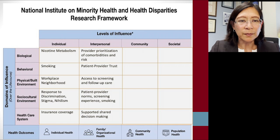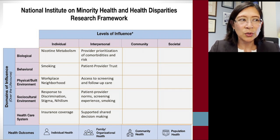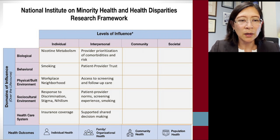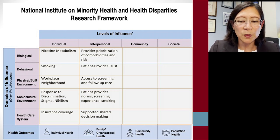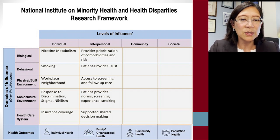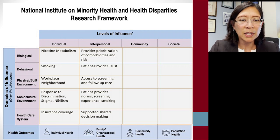When you look at lung cancer at the individual level, there are biologic factors, namely nicotine metabolism or susceptibility to cigarette smoke. There are individual behavioral issues like smoking behavior, physical environment, and social norms of smoking. There's also the environment in terms of exposure to asbestos or radon, and at the individual level, there's always the issue of insurance coverage. Healthcare disparities are complex with many ways to address them.